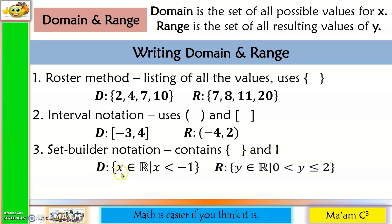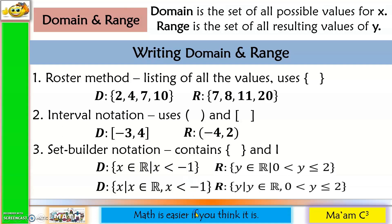In set builder notation, an example is read as 'x is an element of real numbers such that x is less than negative 1.' Others write it as 'x such that x is an element of real numbers or x is less than negative 1.' Either form is correct.